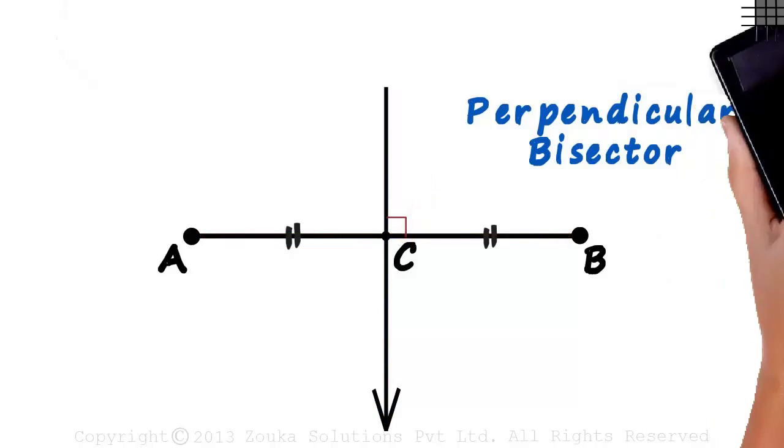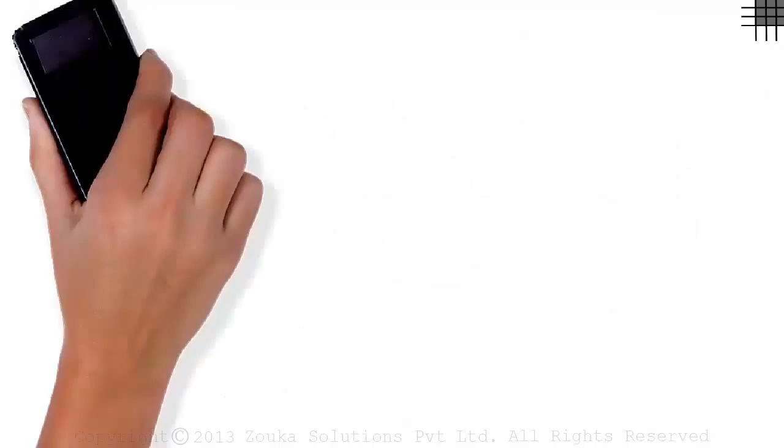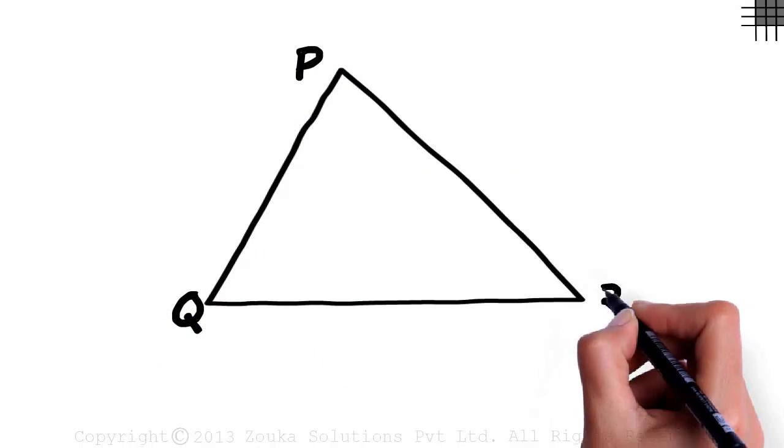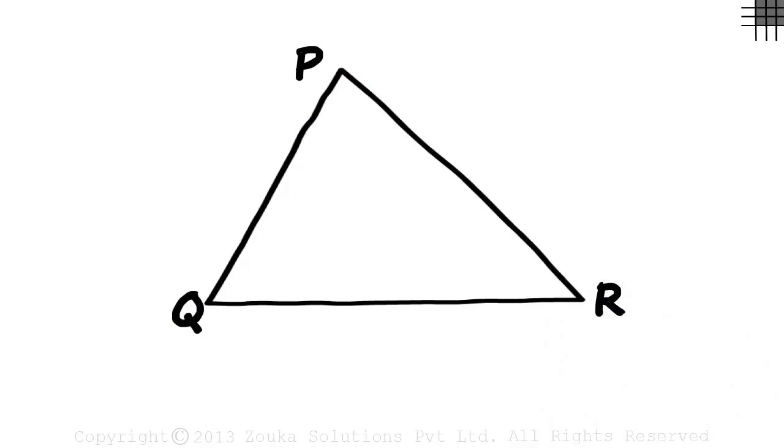Let's erase this and look at perpendicular bisectors in a triangle. Consider triangle PQR. If we draw a perpendicular bisector of each side of a triangle, in all we will have three of them.